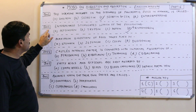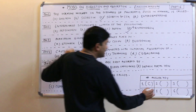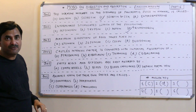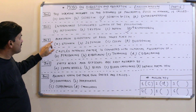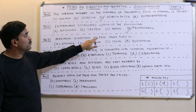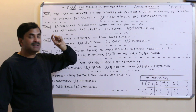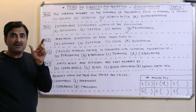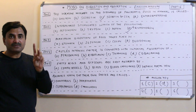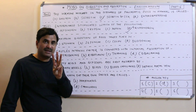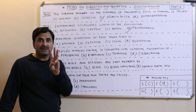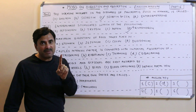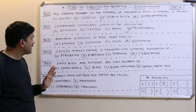So enterokinase will stimulate trypsinogen so that it is converted into active trypsin. The answer to question number two is D, that is trypsinogen. Question number three: maximum digestion of food takes place in — this is a very important question. Digestion occurs in either the buccal cavity, the stomach, or the intestine.